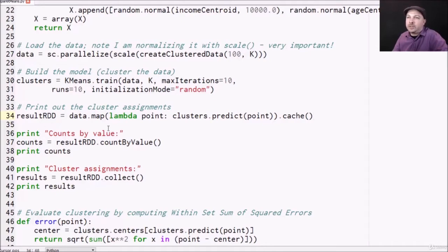So remember result RDD has mapped every individual point to the cluster it ended up with. So now we can use count by value to just count up how many values we see for each given cluster ID, and we can print that list out.